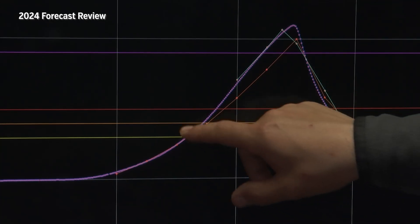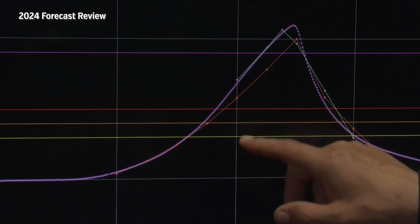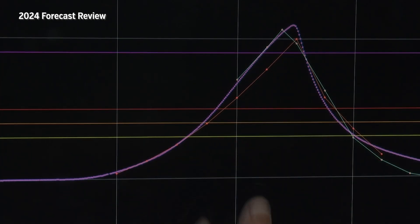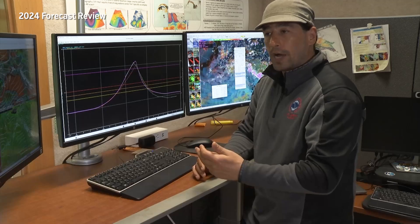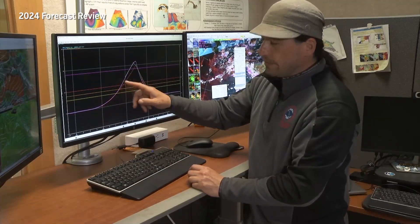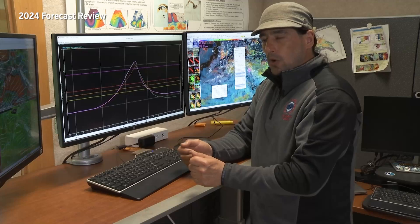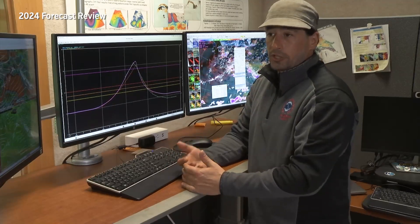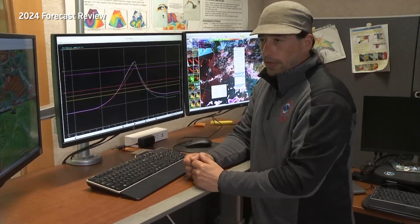Once we started seeing this deviation from our rate of rise, and since it's to the left of our forecast, we know that rate of rise is much higher than what we were expecting. When we were starting to see this deviation within the rate of rise, we were able to start making that pivot and adjusting our forecast.